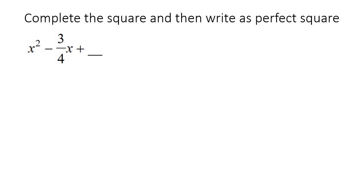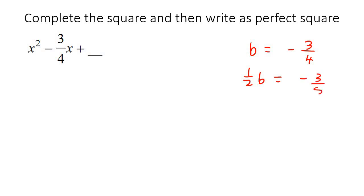Now we're going to start using fractions. So here we have a fraction — it gets a little bit more interesting now, but it's the same thing. So you say that b is negative 3 over 4. Half of that — you might want to type this on your calculator — is actually negative 3 over 8. So you're going to put negative 3 over 8 over here to the power of 2, then open up a bracket and just say x take away 3 over 8 to the power of 2.